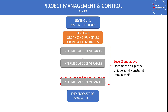After level 1, the other levels — for example level 2 and above — depend on the size of the project. If it is a big project, we may need more levels; it depends on our scope. These are called intermediate deliverables. And finally, we reach the end project, which is our goal and objective for which the project is executed.